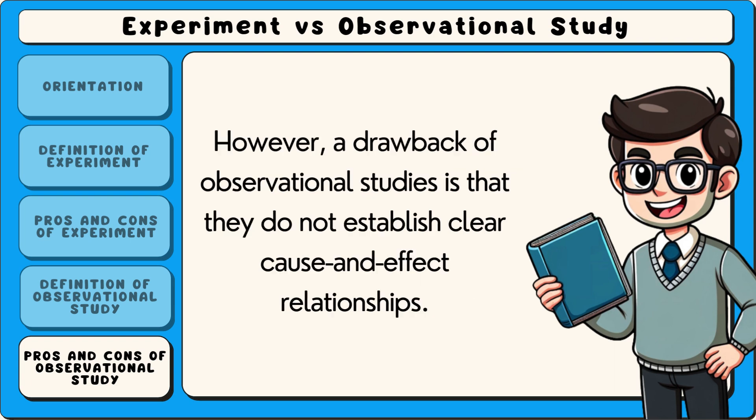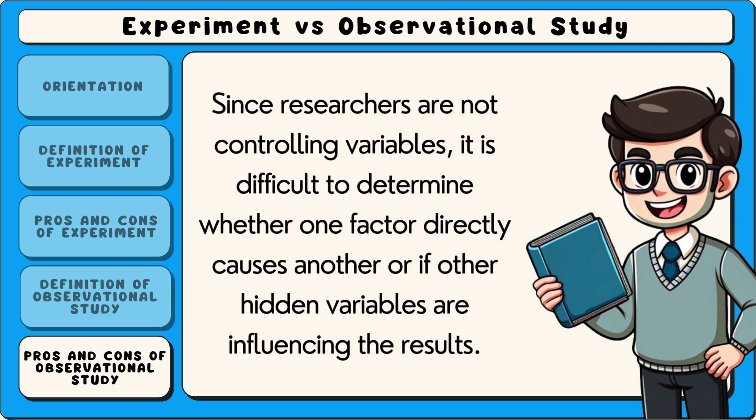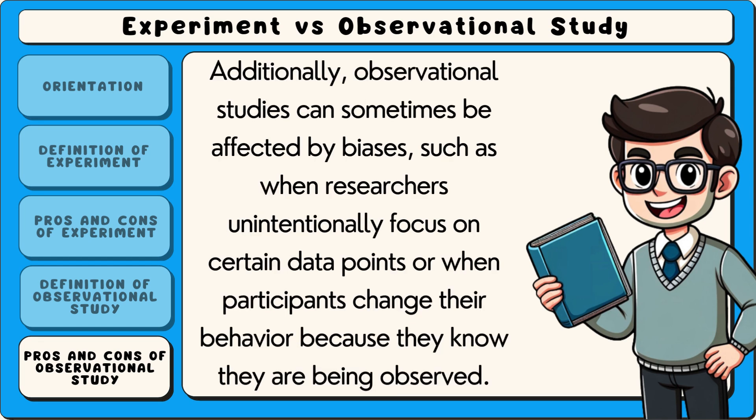However, a drawback of observational studies is that they do not establish clear cause-and-effect relationships. Since researchers are not controlling variables, it is difficult to determine whether one factor directly causes another or if other hidden variables are influencing the results. Additionally, observational studies can sometimes be affected by biases, such as when researchers unintentionally focus on certain data points or when participants change their behaviour because they know they are being observed.